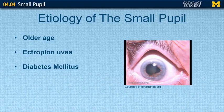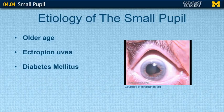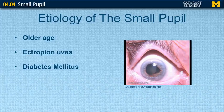Other causes for a small pupil include older age — in general, older people do not dilate as well. Ectropion uvea, where the pigmented layer of the iris tissue has migrated onto the anterior surface of the iris, also results in poor dilation. And in diabetic patients, in general, they do not dilate very well either.